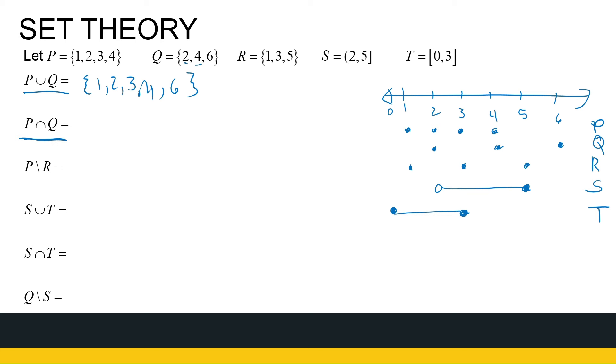Well, P intersection Q is what they have in common, is what they share, something that's in the one and in the other. So if I look at those two sets, what I see they have in common are the numbers two and four. So two and four is in the intersection.